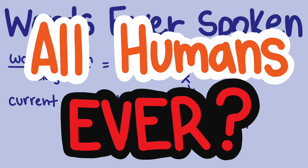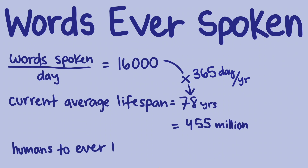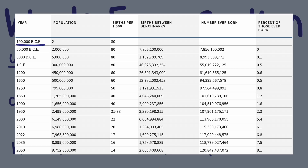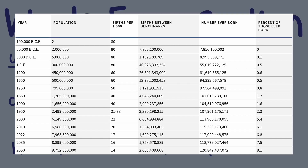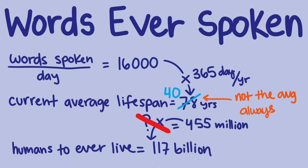What about the number of humans that have ever lived? Some have estimated a total of 117 billion humans. That might seem surprisingly low, but we can't just multiply 455 million by 117 billion — that would give an overestimate because the average lifespan has not always been 78 years. In 1900, average life expectancy was only 47 years. During the Neolithic era, it was estimated at just 30 years. So instead, let's take the total number of humans ever, multiply by an average life expectancy of 40 years, then by 16,000 words a day, then by 365 days in a year. That gets us a little more than 10 to the 19th.